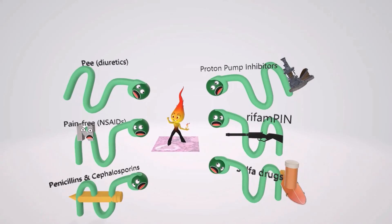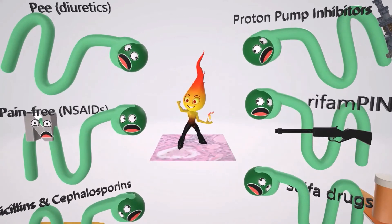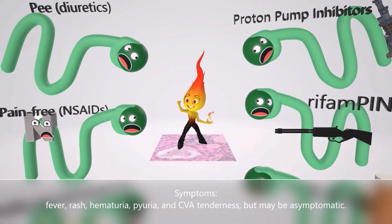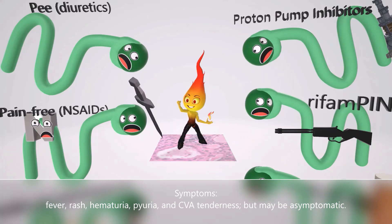Let's talk about symptoms. The inflammation guy looks hot and has a rash, helping us remember that the hypersensitivity reaction is associated with fever and rash. It may also be associated with hematuria — represented by the red blood cell in his urine — as well as pyuria and costovertebral angle tenderness. It's important to remember that the condition may be asymptomatic.